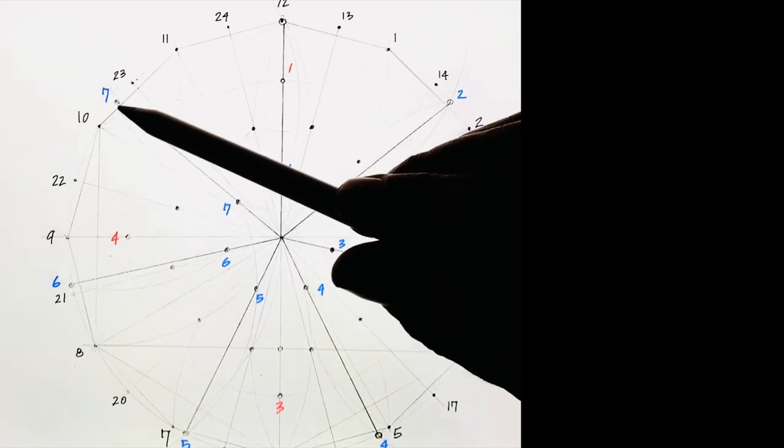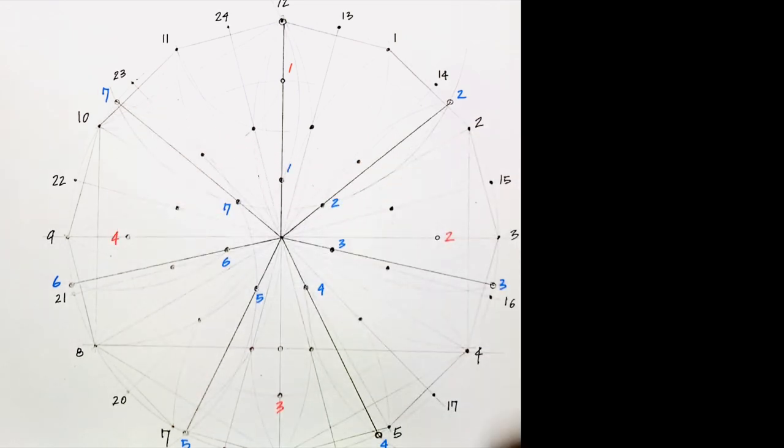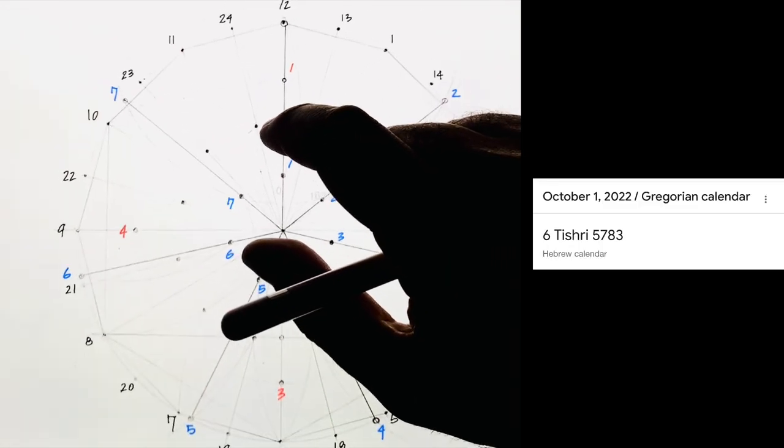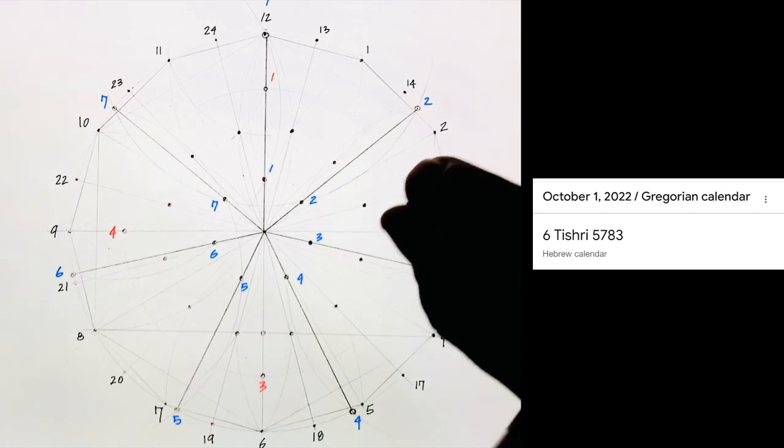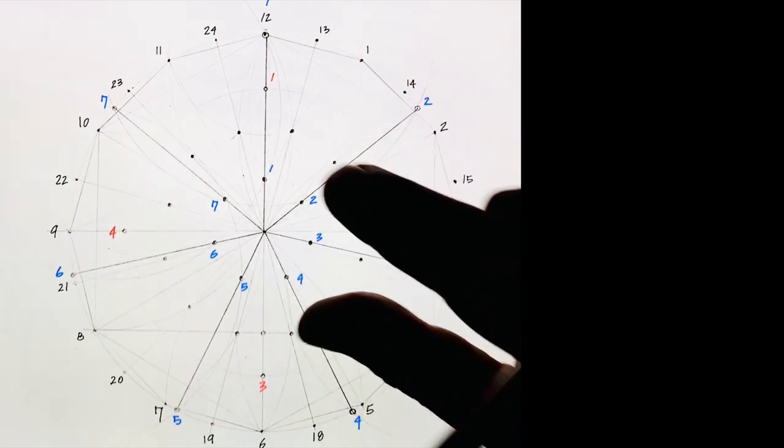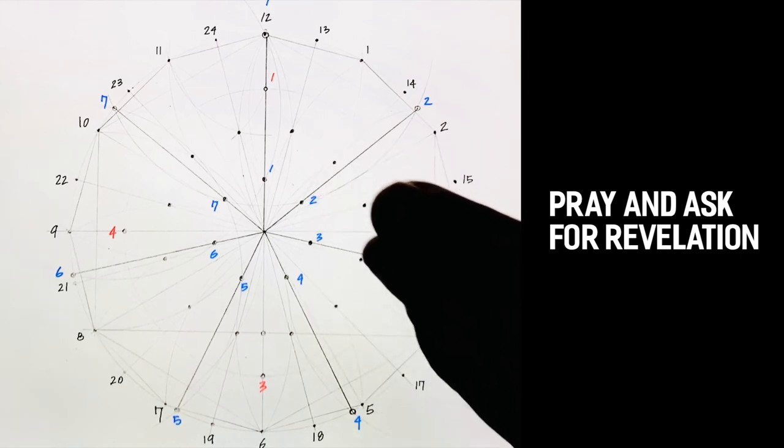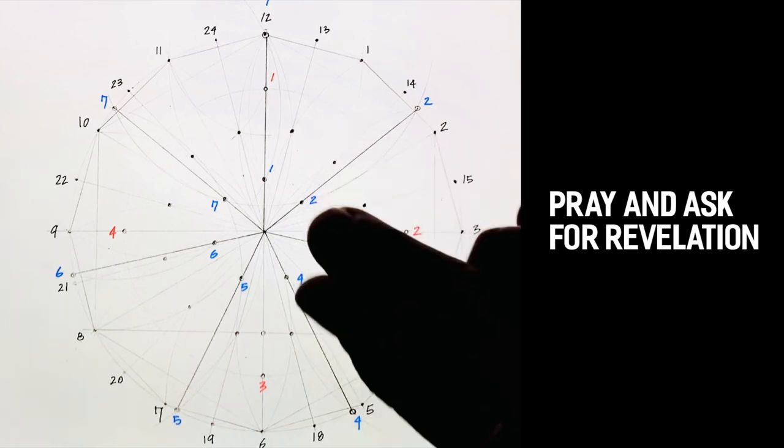In the Jewish calendar, this number seven is critical. And if you look at what month we're in, you'll understand what I'm saying. So I'm giving you a little bit of homework to do, but the main homework to do is prayer. You're going to pray about this and try to ask the Lord for confirmation and revelation and insight.